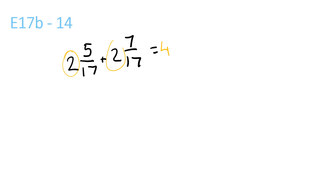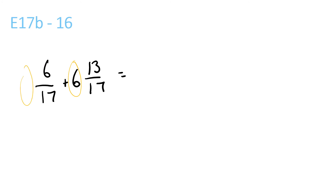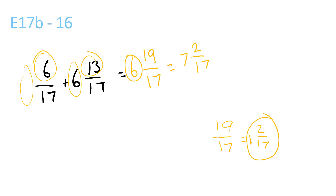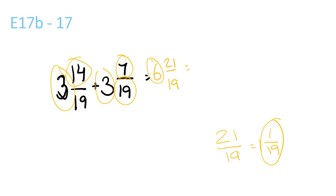2 plus 2 is 4. 7 plus 5 is 12 over 17. You can't reduce that anymore because the top one is lower than the bottom one, so that's your answer. 2 plus 2 is 4, and 5 plus 7 is 12 over 17. You can't reduce it anymore because the top one is less than the bottom one. 6 plus nothing is 6, and 13 plus 6 is 19 over 17, which is equal to 1 and 2 over 17. So you have 1 and 2 over 17 plus 6, which is 7 and 2 over 17. 3 plus 3 plus 6 is 12, over 19, giving 21 over 19. 1 and 1 over 19 plus 6 is equal to 7 and 1 over 19.